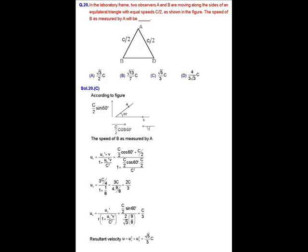MCQ question number 20. In this question, 2 observers A and B are moving along the sides of an equilateral triangle with equal speeds C by 2, where C is velocity of light as shown in figure. In this question, we have to find out the speed of B as measured by A. So, according to figure,